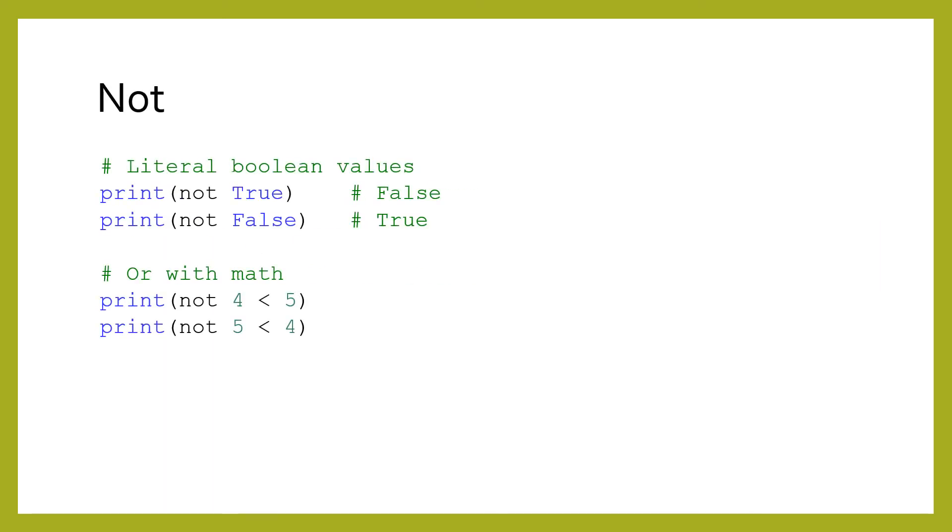The not operator returns true if the expression is false, and false if the expression is true. This is sometimes called the negation or logical opposite. Unlike the and and or operators, the not operator only takes in a single value.